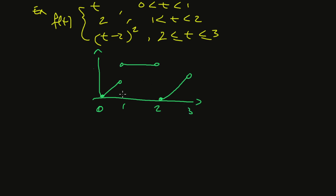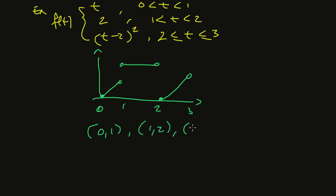From the graph of f of t we see that f is continuous on 0 to 1, continuous from 1 to 2, and continuous from 2 to 3.